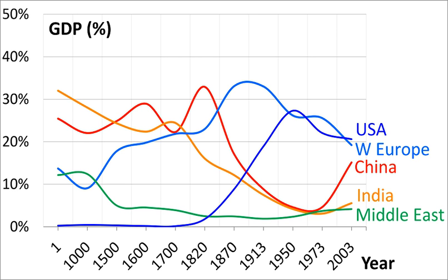The Indian economy under the British Raj describes the economy of India during the years of the British Raj, from 1858 to 1947. During this period, the Indian economy essentially remained stagnant, growing at the same rate as the population. India experienced deindustrialisation during this period. Compared to the Mughal era, India during the British colonial era had a lower per capita income, a large decline in the secondary sector, and lower levels of urbanisation.